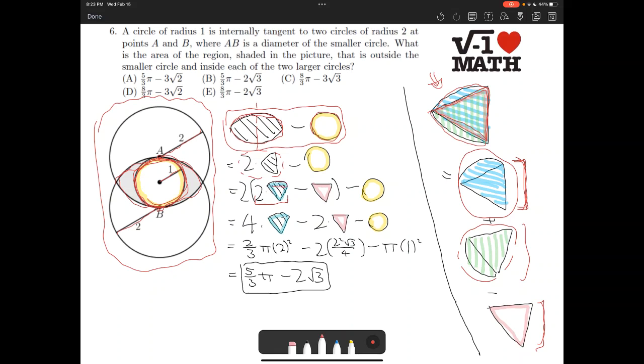So this is the sector, and this is the triangle. And now this simplifies to this expression here. Four times the 60-degree arc, or sector, minus two times the equilateral, minus the yellow circle.